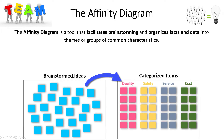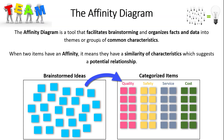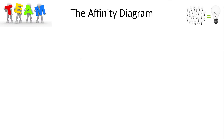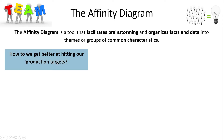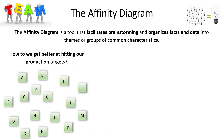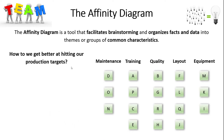The next tool is the affinity diagram — a fantastic tool that facilitates brainstorming and helps you organize facts and data into common themes or groups. It's called an affinity diagram because when two ideas have an affinity for each other, they share some similarity. For example, let's say you want to brainstorm around how to get better at hitting production targets. You get your team together, facilitate a brainstorming activity, put all the ideas on post-it notes, and then use the affinity diagram to find common themes — some related to maintenance, some to training, some to quality, the layout of the production floor, or the equipment itself.